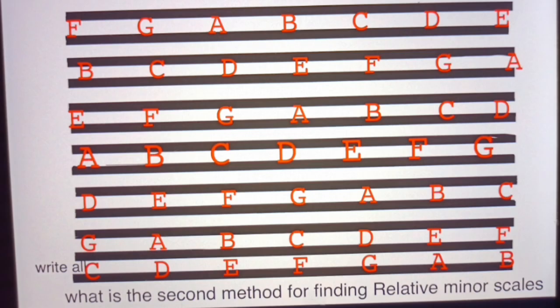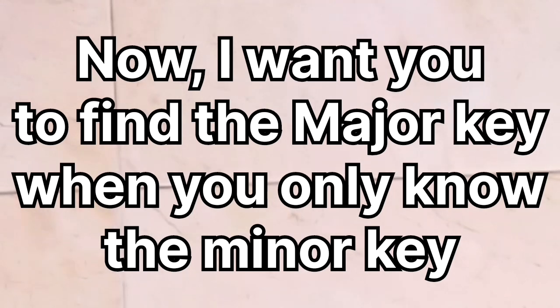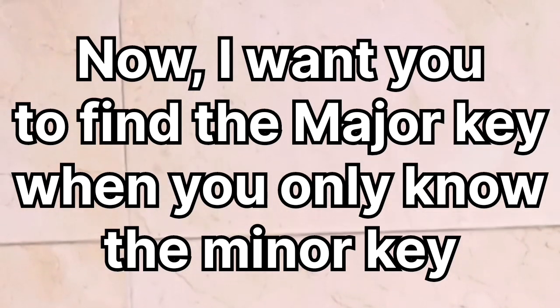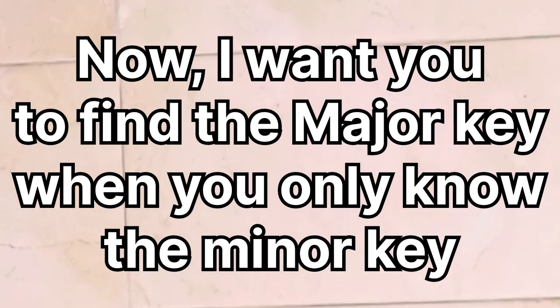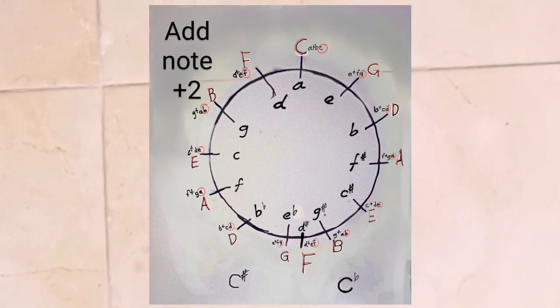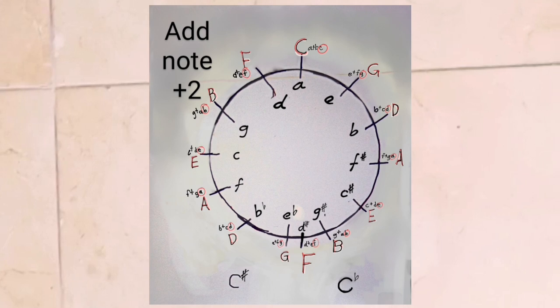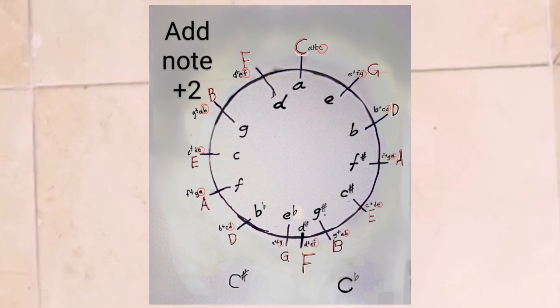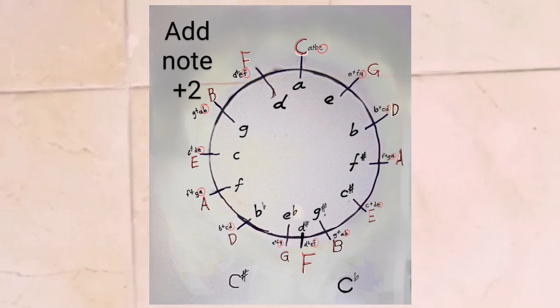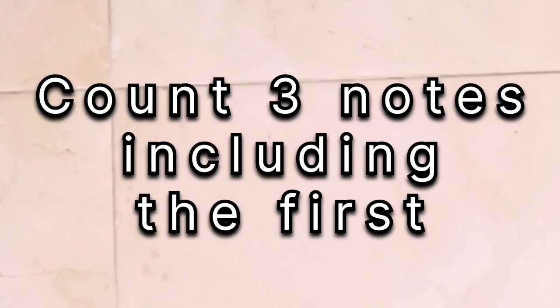We're going to move into the next section: how to find minor scales when you don't know the major scales. Quiz: write down the sixth degree and find them on the chart. Now, when you only know the minor key and want to find the major key, it is again a matter of using the circle of fifths. For example, starting from C minor, you count C, D, E — and E-flat is the relative major scale. You count three letter notes and there you go.